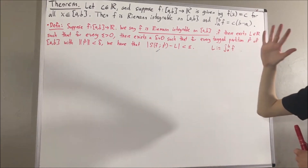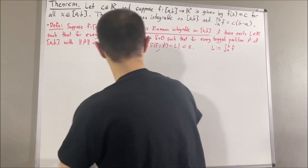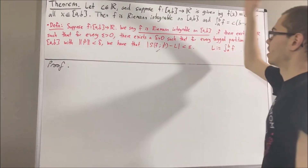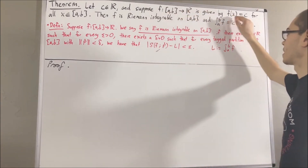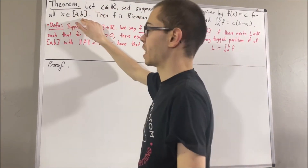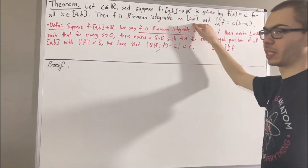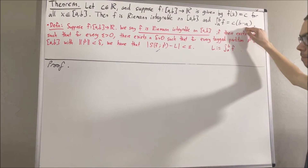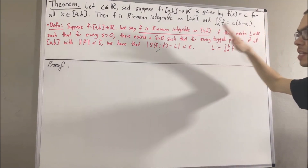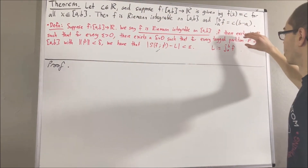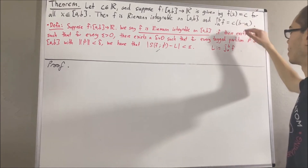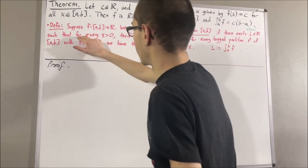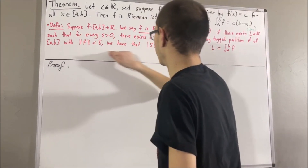Now let's get into proving this theorem. We're trying to prove that our function f defined by f(x) = c for all x in [a, b] is Riemann integrable on [a, b], and that the value of the integral equals c times (b minus a). By the definition, we're taking L to be c(b − a), and we're essentially trying to prove that this statement is true.